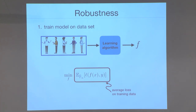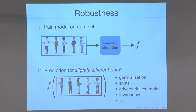This ensures we do well on the data we've seen. But an increasingly important question is: what happens when predictions are made on data that's not exactly the training data? The most classical form is generalization — looking at data that comes from essentially the same underlying distribution as the training data, just a different sample, but we want to do well for those too.